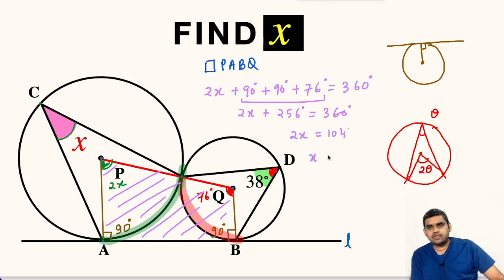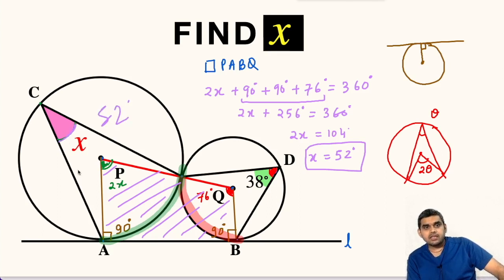So x will be 104 divided by 2, that is 52 degrees. So the value of angle x is 52 degrees. If you want to get more such videos, do subscribe to my channel. See you in the next video.